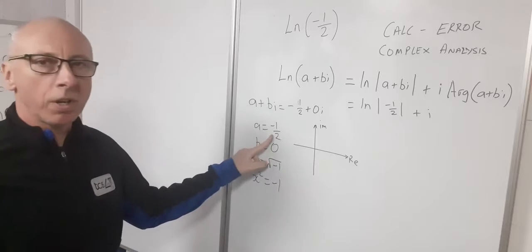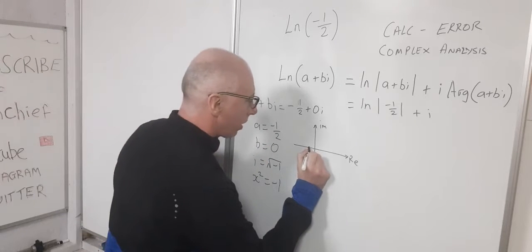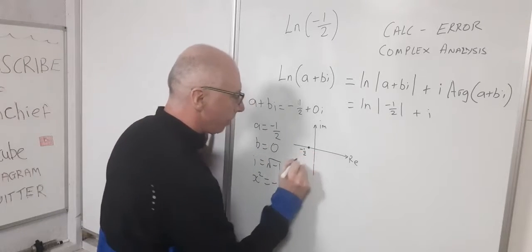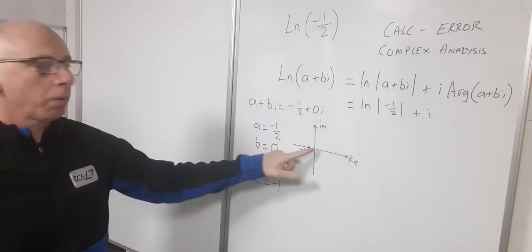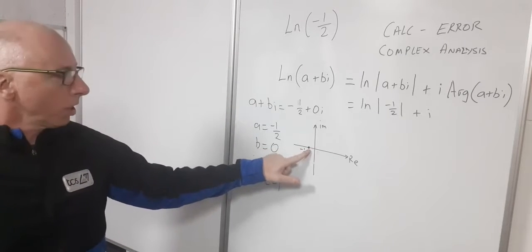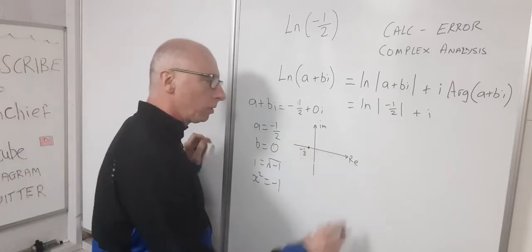Let's plot this number on this complex graph. So a equals minus one-half. Minus one-half could be somewhere here. And our imaginary number is zero. So it's going to correspond to this number here on the real number line.